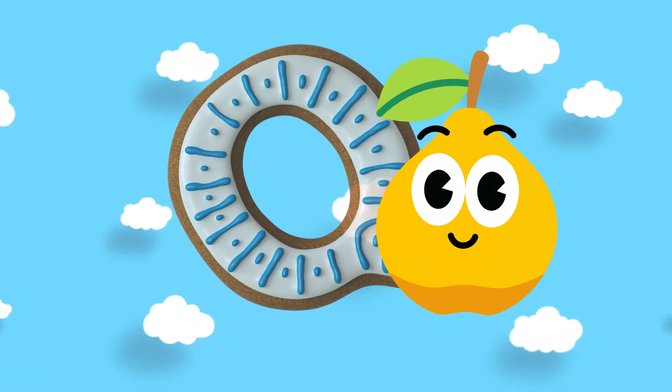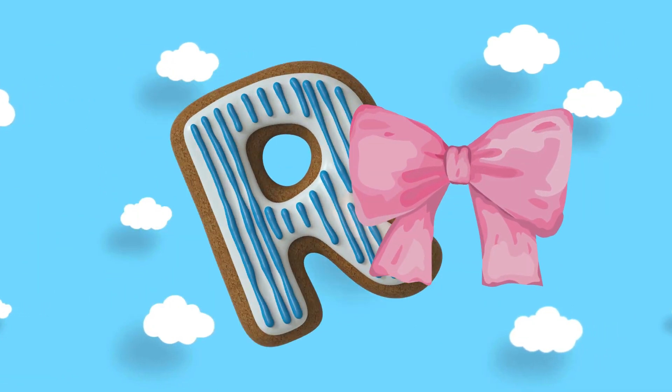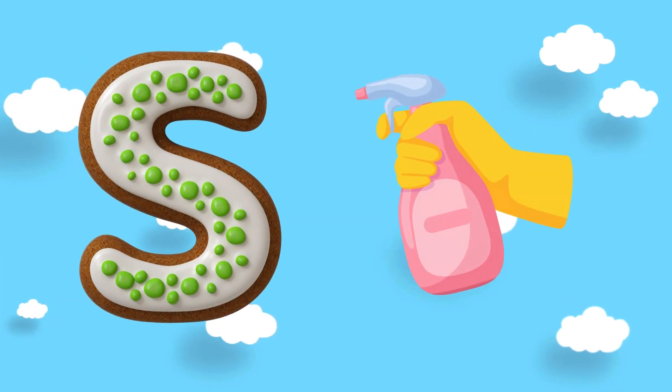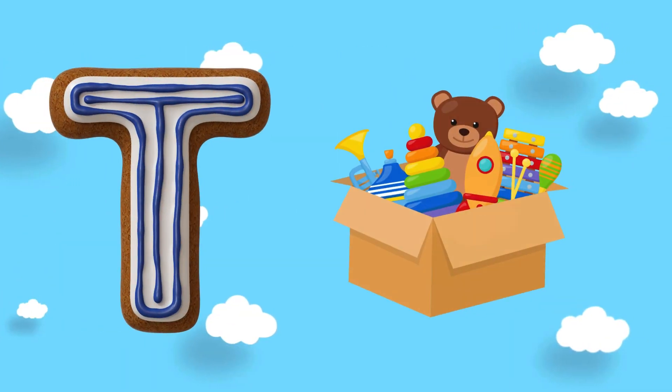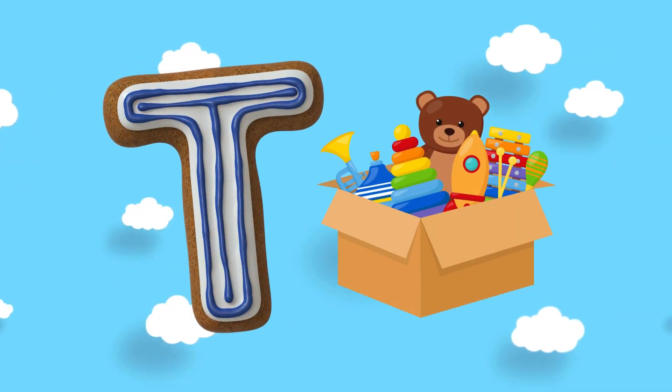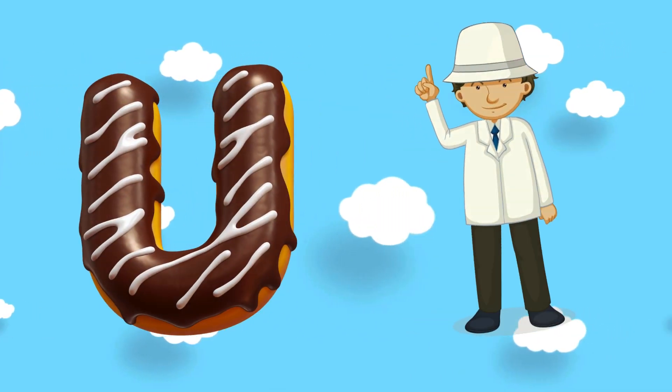Q is for quats, R is for ribbon, S is for spray, G is for toys, Q is for umpire.